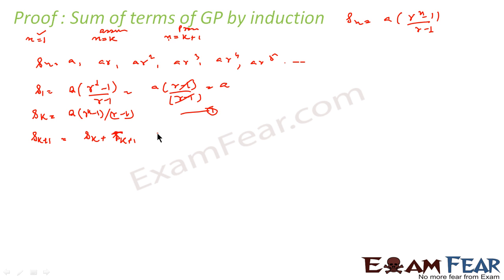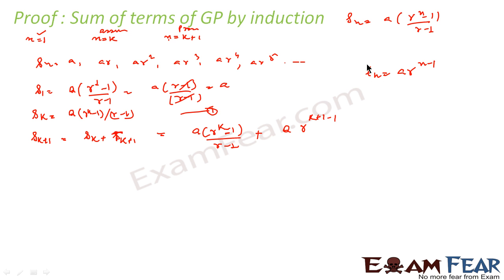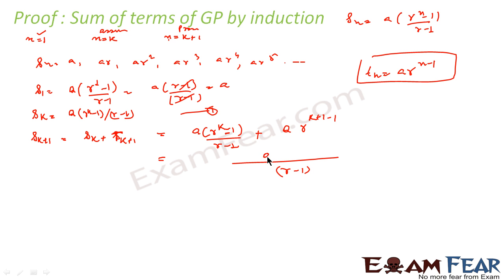So s of k plus 1 equals s of k plus t of k plus 1. We substitute: s of k is a times (r to the power k minus 1) by (r minus 1), and since tn equals a times r to the power n minus 1, t of k plus 1 equals a times r to the power k. We then expand and simplify the expression.